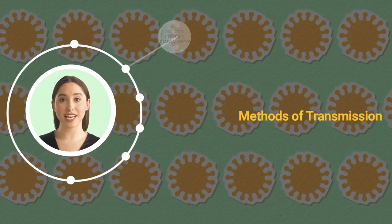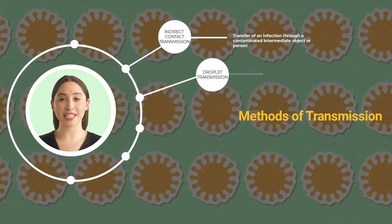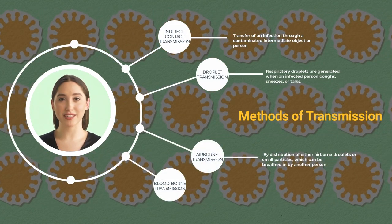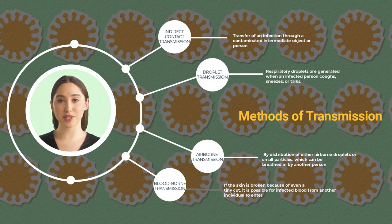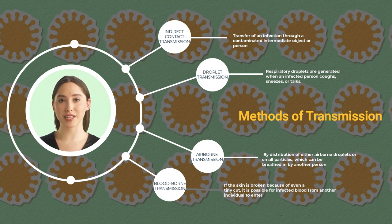Indirect transmission involves the transfer of an infection through a contaminated intermediate object or person. Respiratory droplets are generated when an infected person coughs, sneezes, or talks. Airborne transmission occurs by distribution of either airborne droplets or small particles, which can be breathed in by another person. A person's skin prevents germs from entering into the body, but if the skin is broken because of even a tiny cut, it is possible for infected blood from another individual to enter.